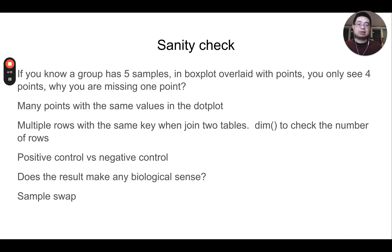Next is about sanity check. Let me give you several examples. For example, if you have a group which has only five samples and you plot the box plot, then you add the dots or overlay on the box plot. However, you only see four points and why you're missing one of them. It's very likely you filtered that sample out, or maybe when you do calculation there's something wrong with your code. Make sure you go back and check your code and see why you're missing that value.